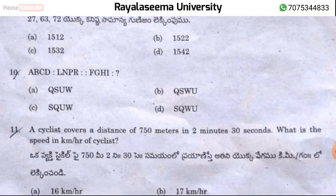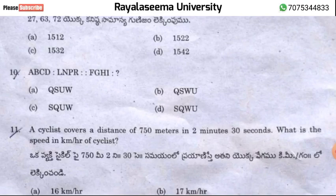Question number 10 is coding and decoding, an analogy-related question. The answer is Q, S, U, W — option A is the correct answer.